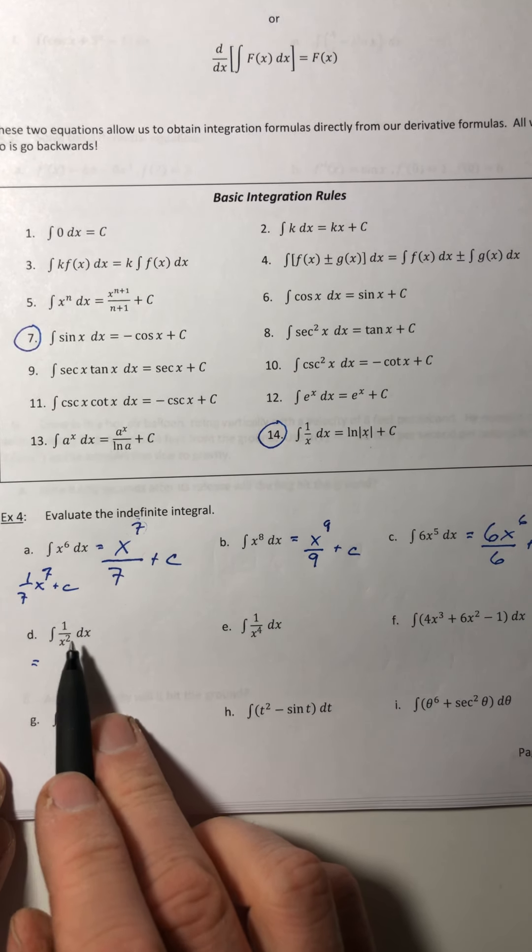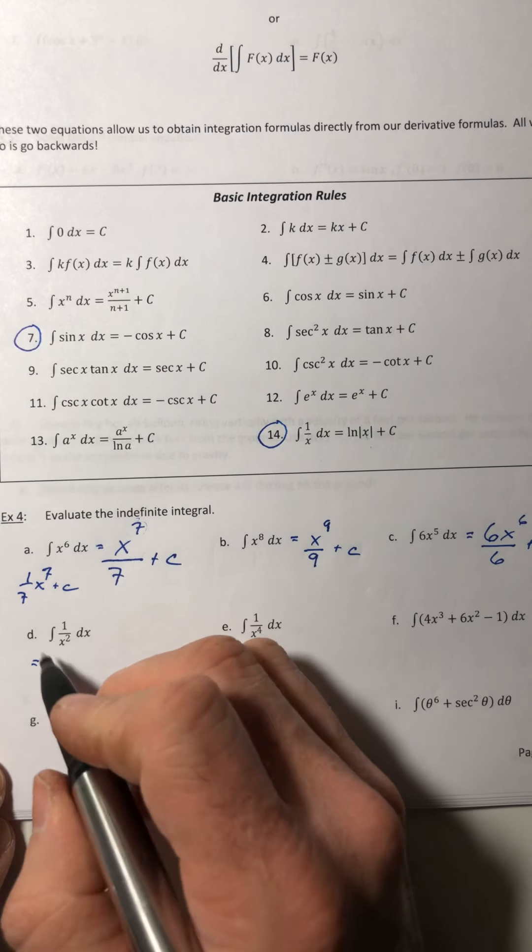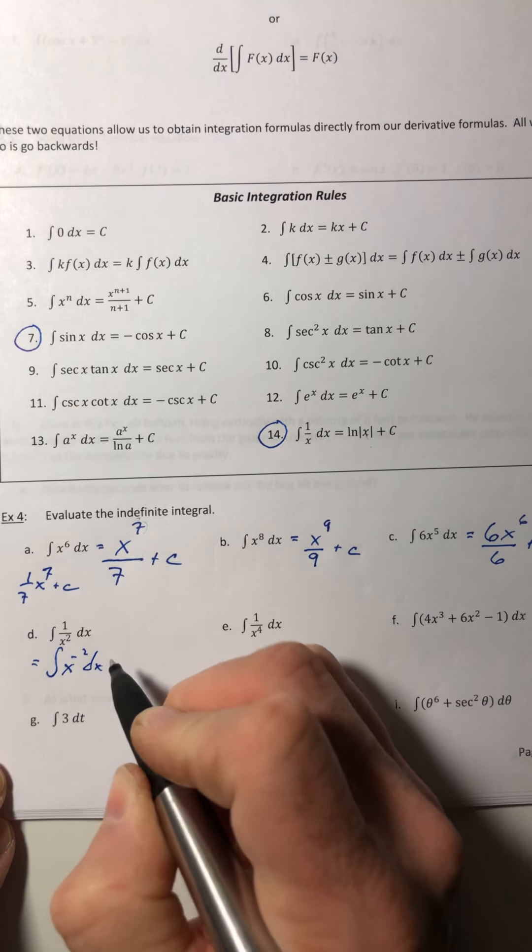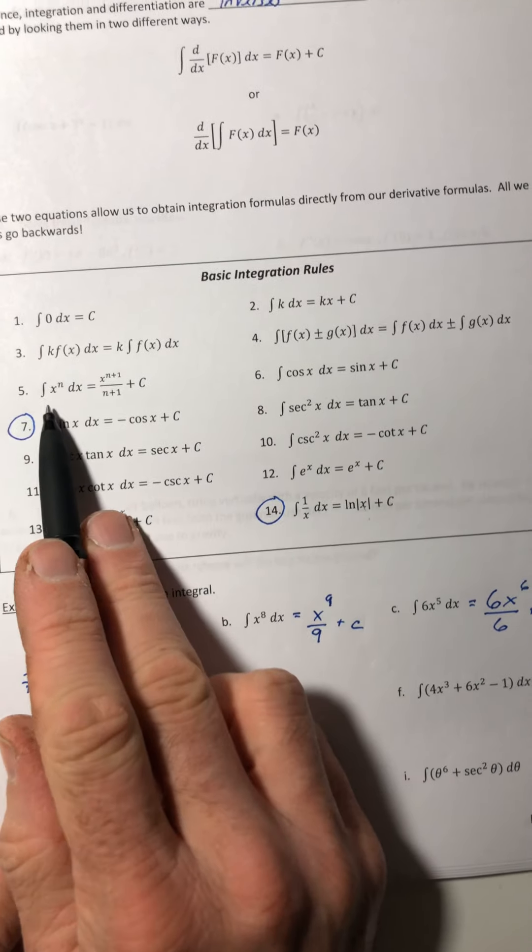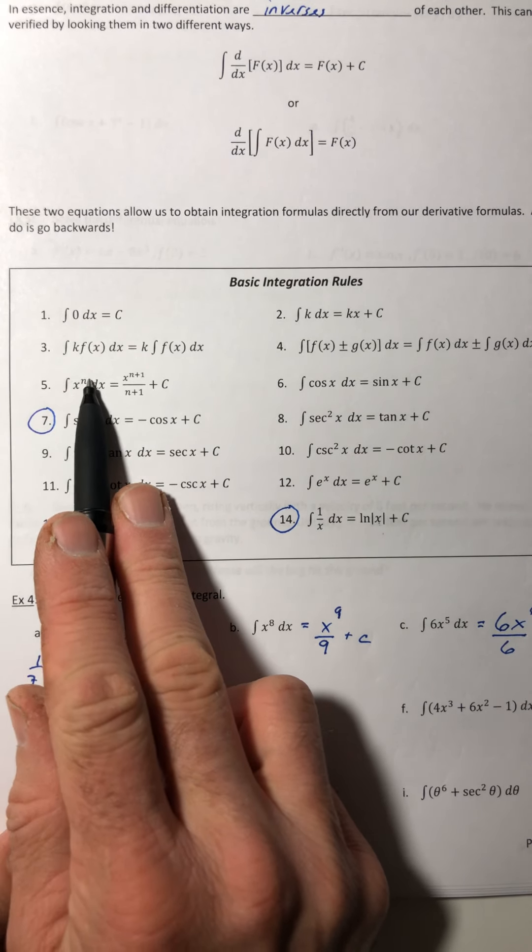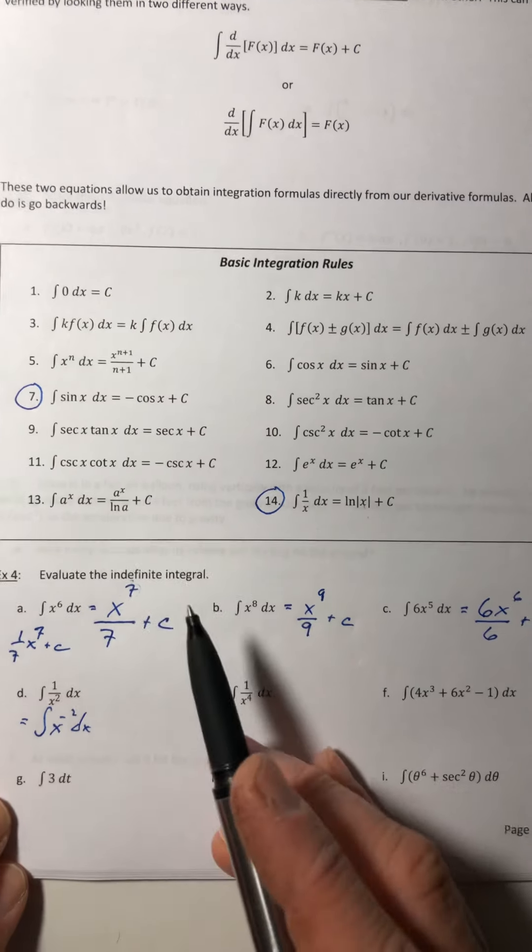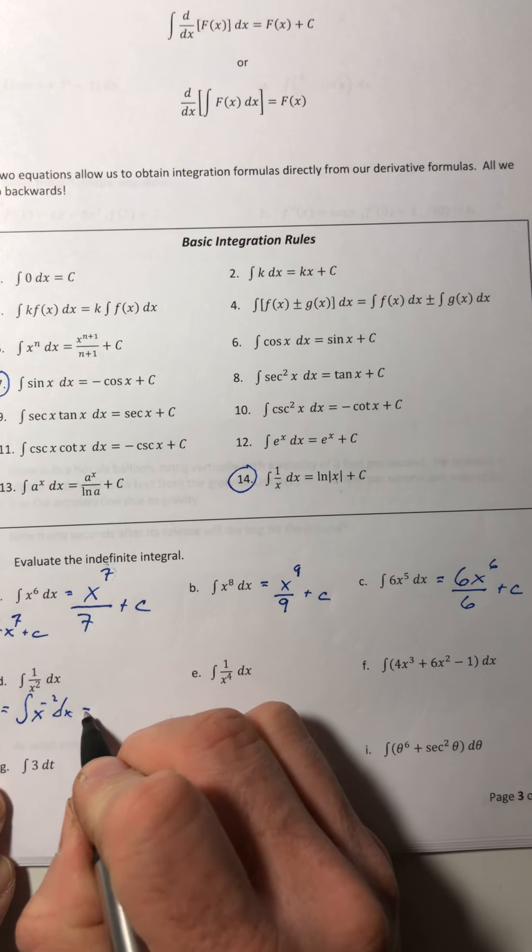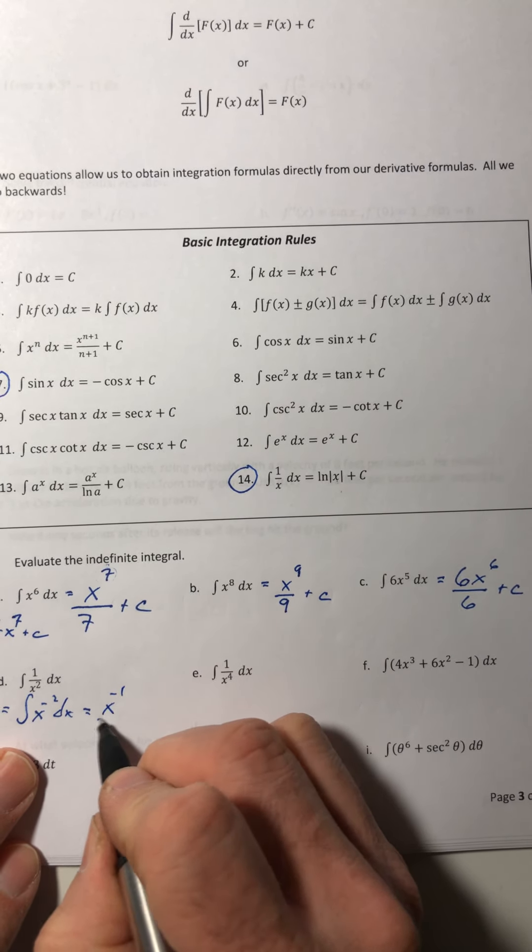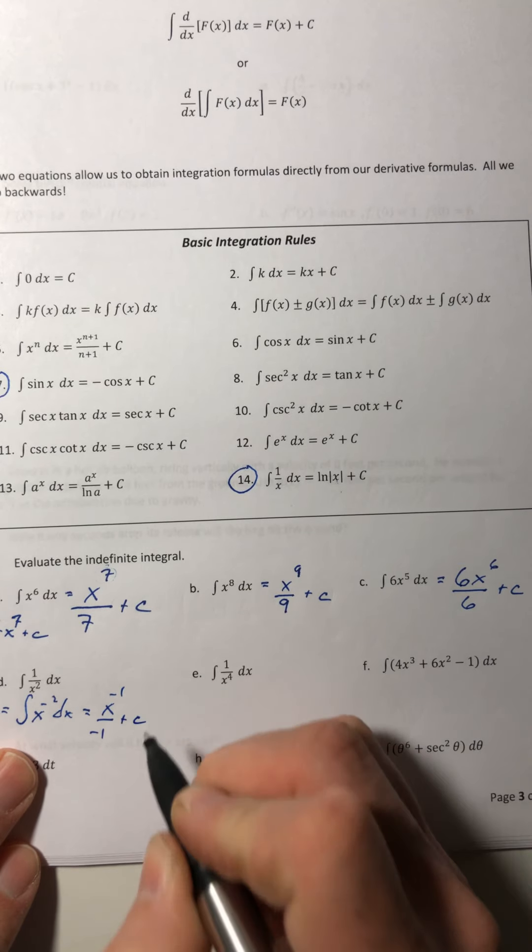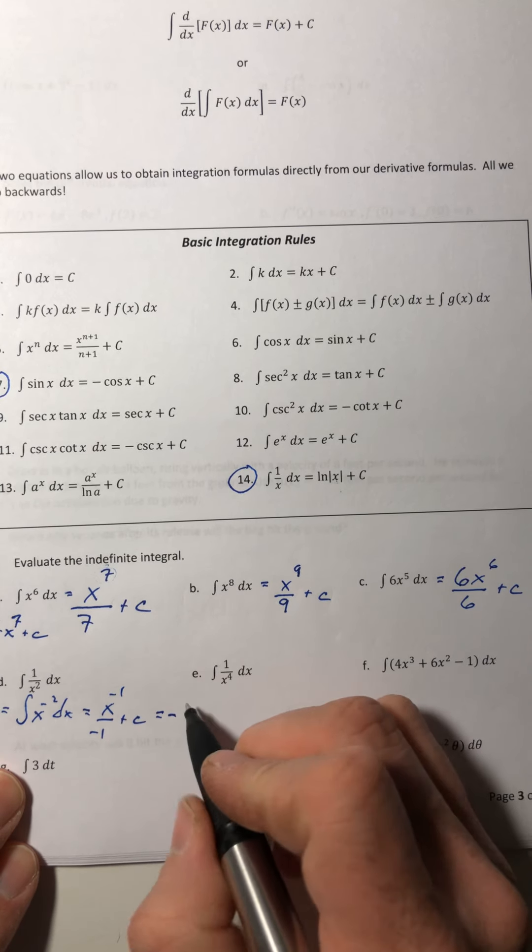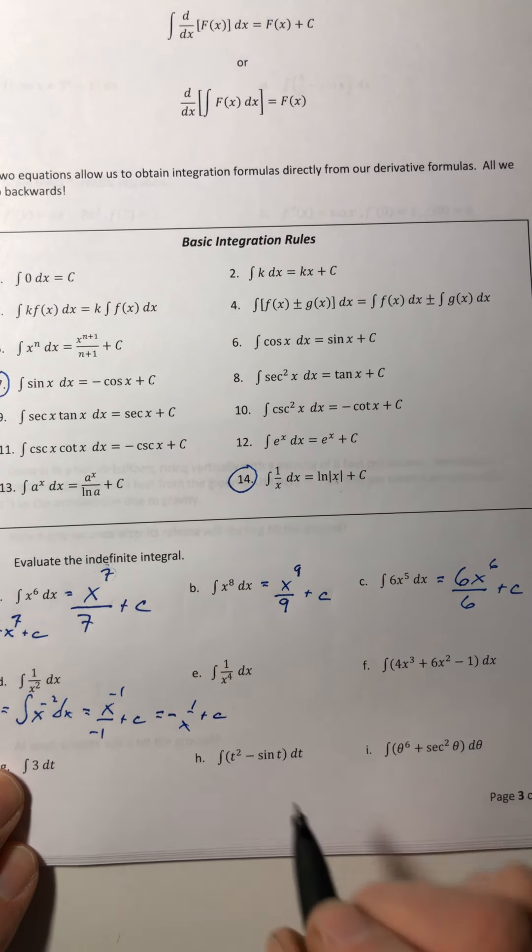So this one, before we do anything to it, just like with derivatives, we have to rewrite it. So we'll change it to x to the negative two, that way it's fitting this power rule that says it has to be x to the n. It's not in a denominator, it's not in a radical, it's just x to the n. Okay, so do the same thing: increase it by one, and then divide by the new exponent plus C. And then we can simplify it, so that would be negative, and I'm also going to flip it down, so negative one over x plus C.